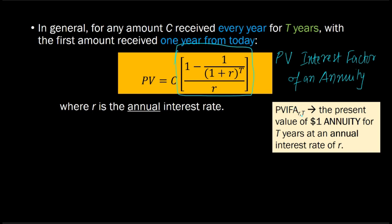You'll notice that I have these subscripts R and T. These denote that if you know what your interest rate or discount rate is, and if you know what your T is, where T is the number of years the annuity is lasting for, then you can just plug those values and get a numerical value for this entire expression.